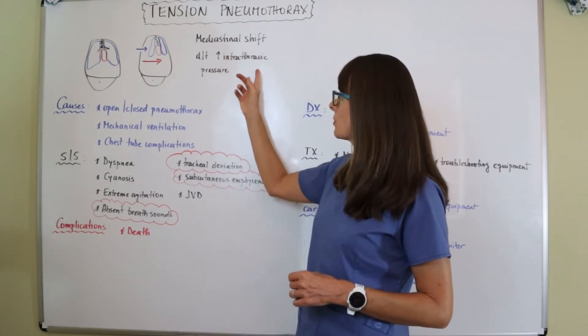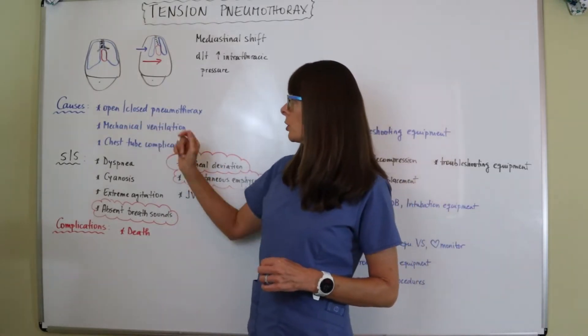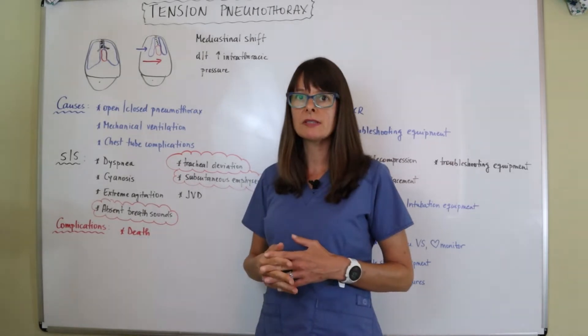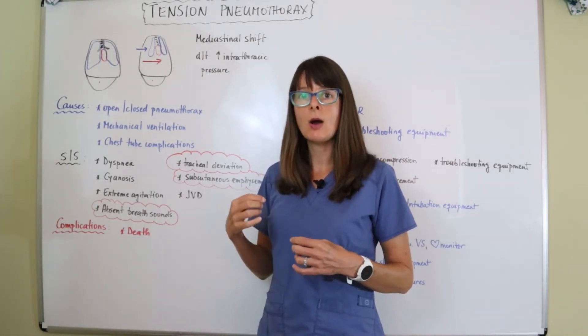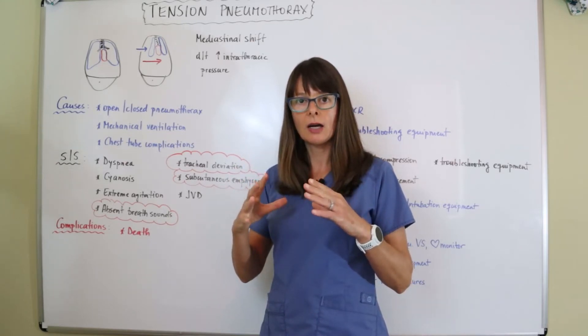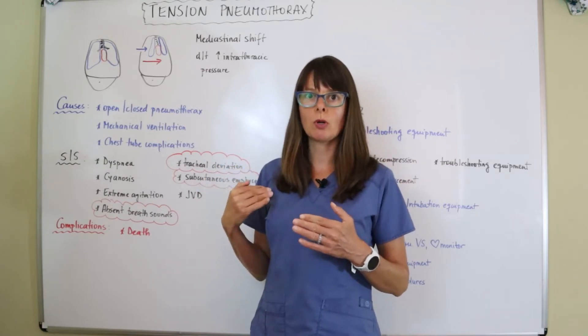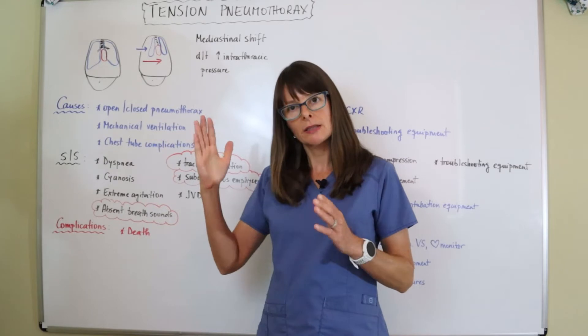This increase in intrathoracic pressure causes are an open or a closed pneumothorax. So any kind of pneumothorax the patient experiences, whatever the reason is, can cause this because now we have air outside the lung inside the pleural cavity. Whether there's an opening to the chest wall or not, there's some sort of tension building up and the contents of the mediastinum move over to the unaffected side.